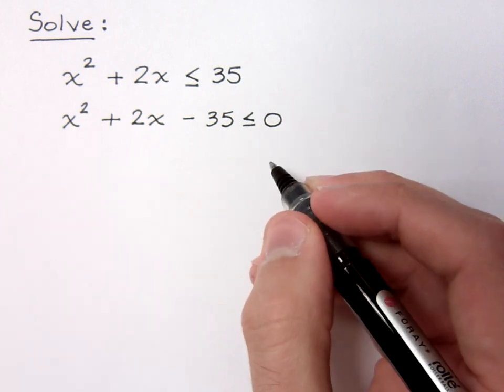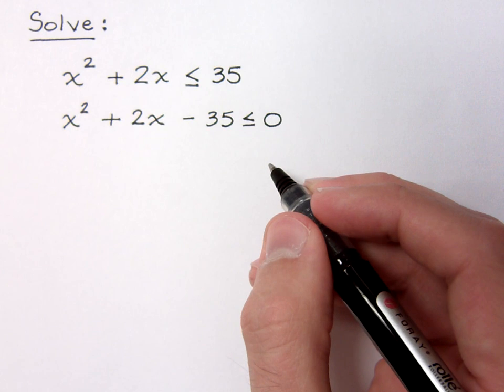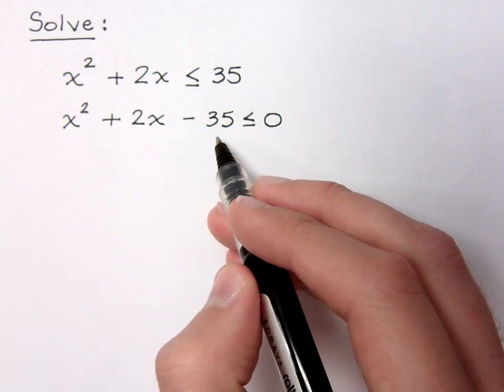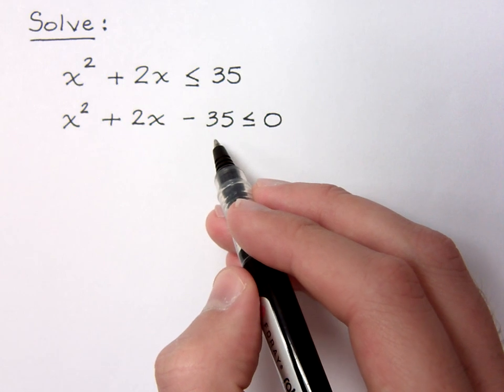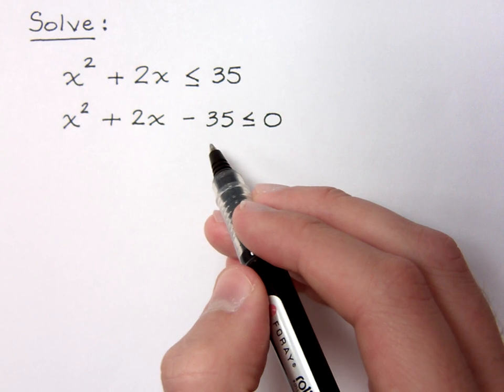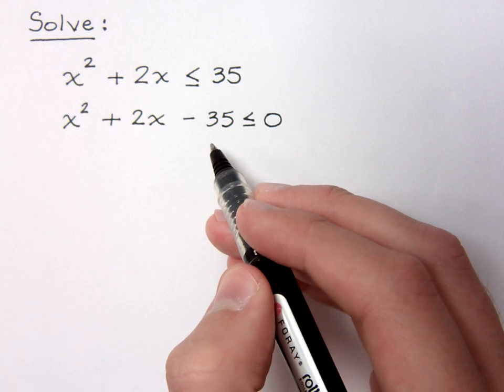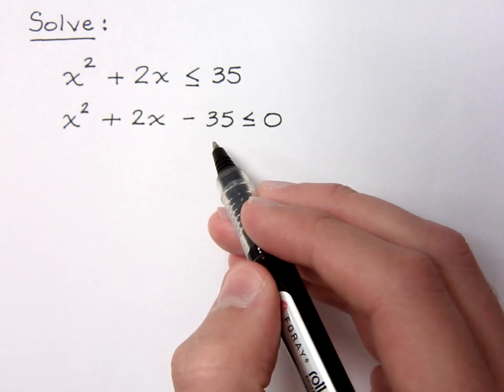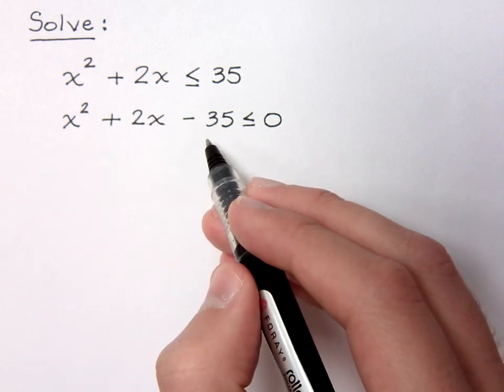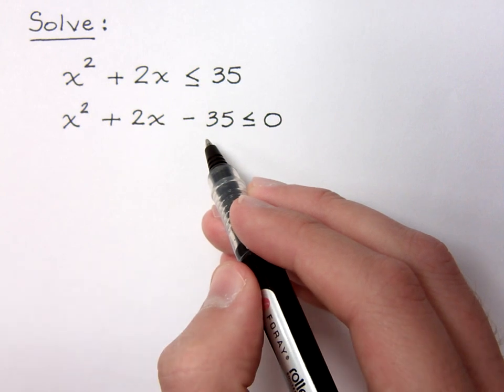Now, the key thing that we're trying to find here is we're trying to find what values of x will make this equal 0. The reason we want to find out what makes this equal to 0 is because on either side of that, you have the potential to be positive or negative. So those critical values, those numbers that make this polynomial equal 0, those values that make it equal 0 act as our gatekeepers between positives and negatives.